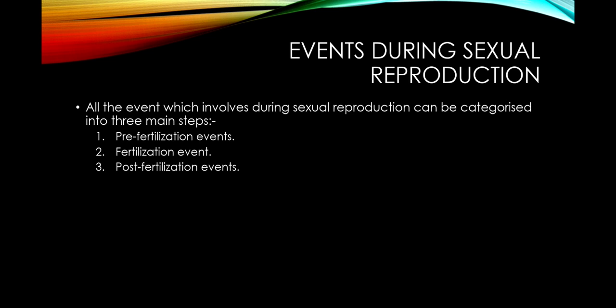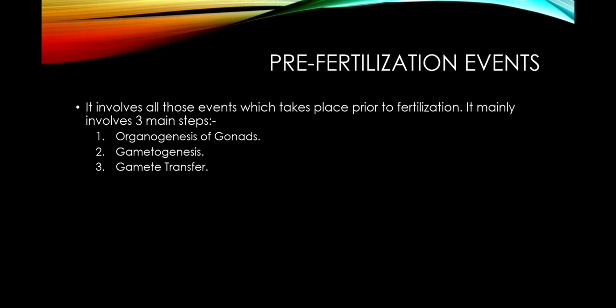Now let's discuss the events during sexual reproduction. All events can be categorized into three main categories: pre-fertilization events, fertilization, and post-fertilization events. The most important event in sexual reproduction is fertilization — the union of male and female gametes. Let's start with the pre-fertilization events, which involve all events that take place prior to fertilization.